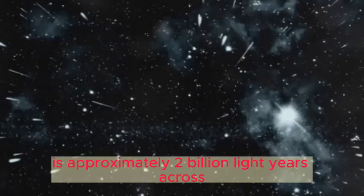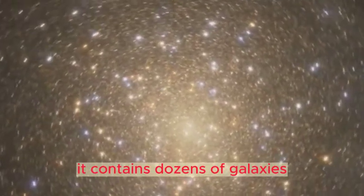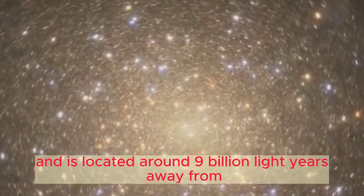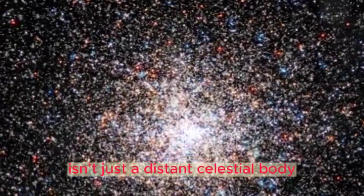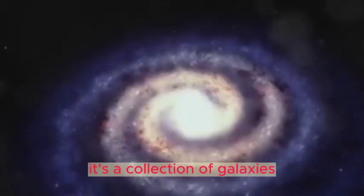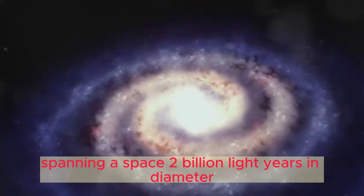The SCL @ 1338+27 is approximately 2 billion light-years across, contains dozens of galaxies, and is located around 9 billion light-years away from us. This colossal supercluster isn't just a distant celestial body, it's a collection of galaxies bound together by gravity, spanning a space 2 billion light-years in diameter.